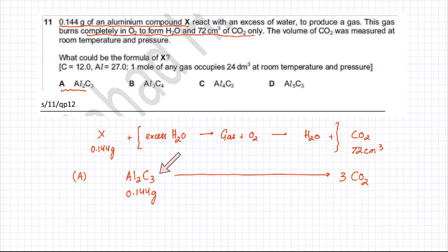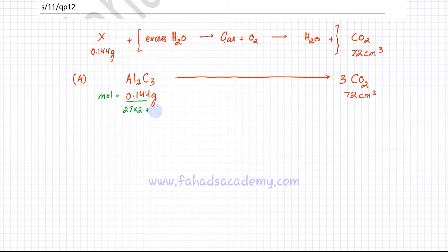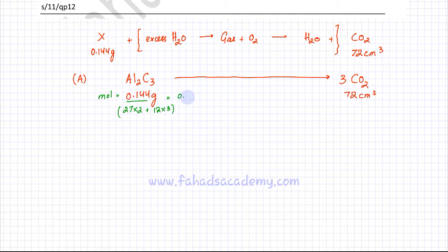The ratio of AL₂C₃ to CO₂ is 1:3. With 0.144 grams, the question states 72 cm³ of CO₂ should be produced if this option is correct. Moles of AL₂C₃ = 0.144 ÷ (27×2 + 12×3) = 0.144 ÷ 90, which gives 0.0016 moles.